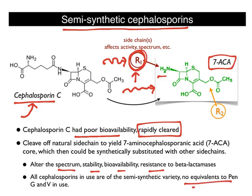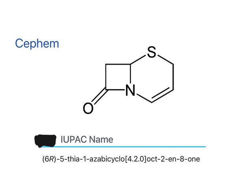There are no equivalents to penicillin G and V among cephalosporins. In case of penicillins, penicillin G and V are natural ones, but there are no natural cephalosporins — all of them are semi-synthetic.